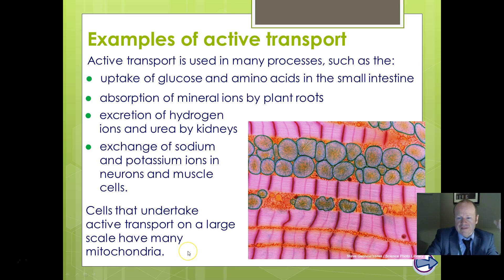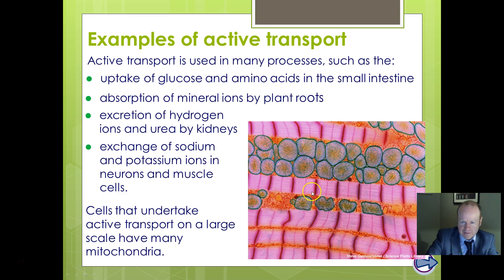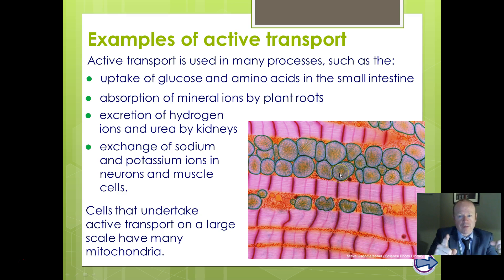A big giveaway that a cell is probably undergoing active transport is lots and lots of mitochondria. Here we have muscle cells, and you can see the mitochondria with their characteristic striation or striping showing the cristae — those folds, the default biology answer: highly folded to give a large surface area.